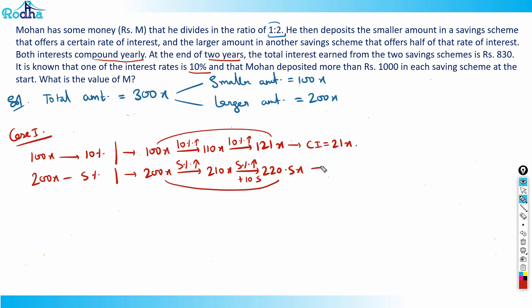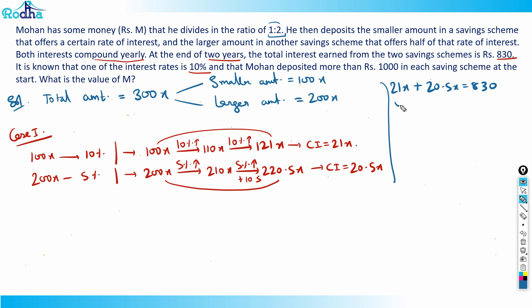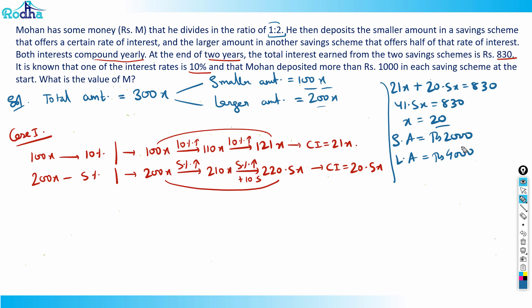Total interest in Case 1: 21x + 20.5x = 41.5x = 830, so x = 20. Therefore the smaller amount = 100 × 20 = ₹2000 and the larger amount = 200 × 20 = ₹4000. Both are more than ₹1000, so this case is valid.